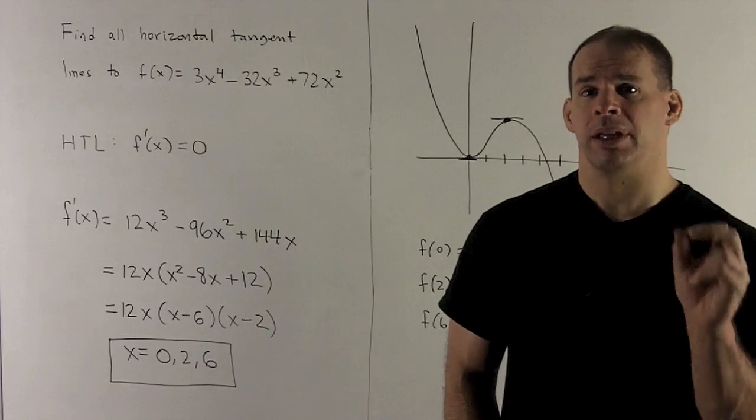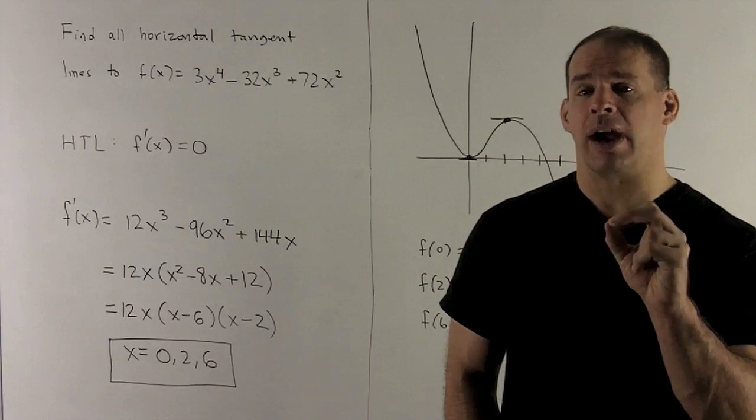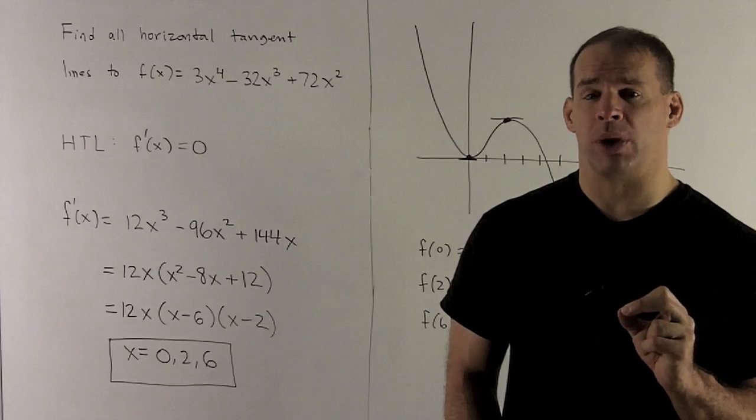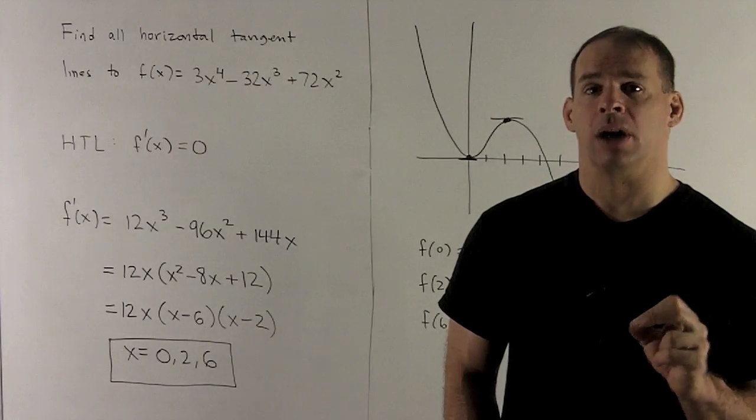On the 72 x squared, the x squared, take the 2 down, 1 comes off the exponent, that gives me 144 times x.